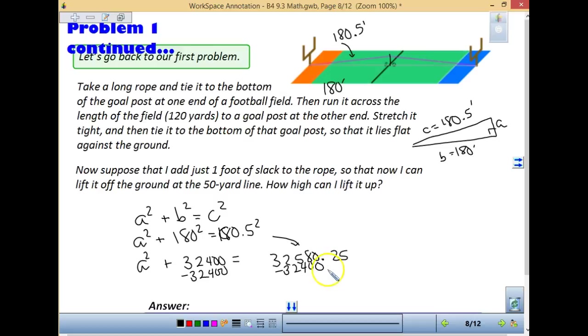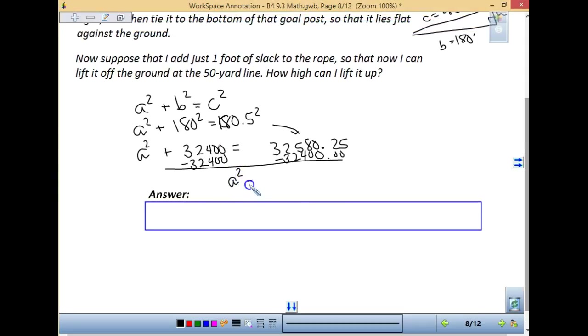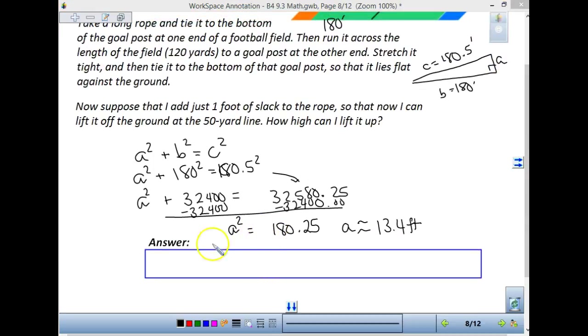It's pretty big numbers we're looking at. And as we do that, once we do that subtraction, we're going to see A squared is actually going to be equal to 180.25, which means A is going to be approximately 13.4 feet. And if we are looking at that answer, which one, go back to the original, could we do? It should be answer D, high enough for a truck to drive under.